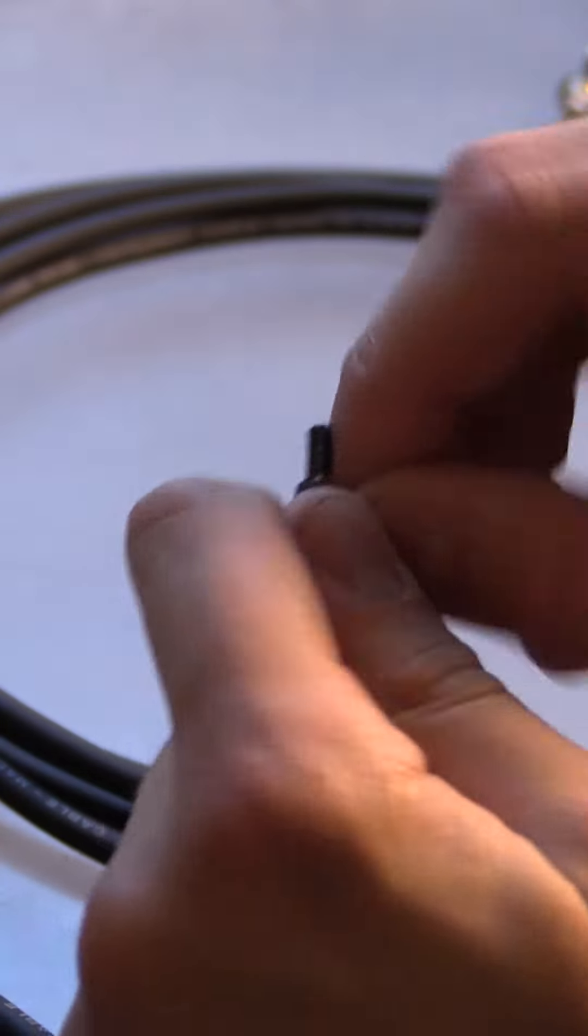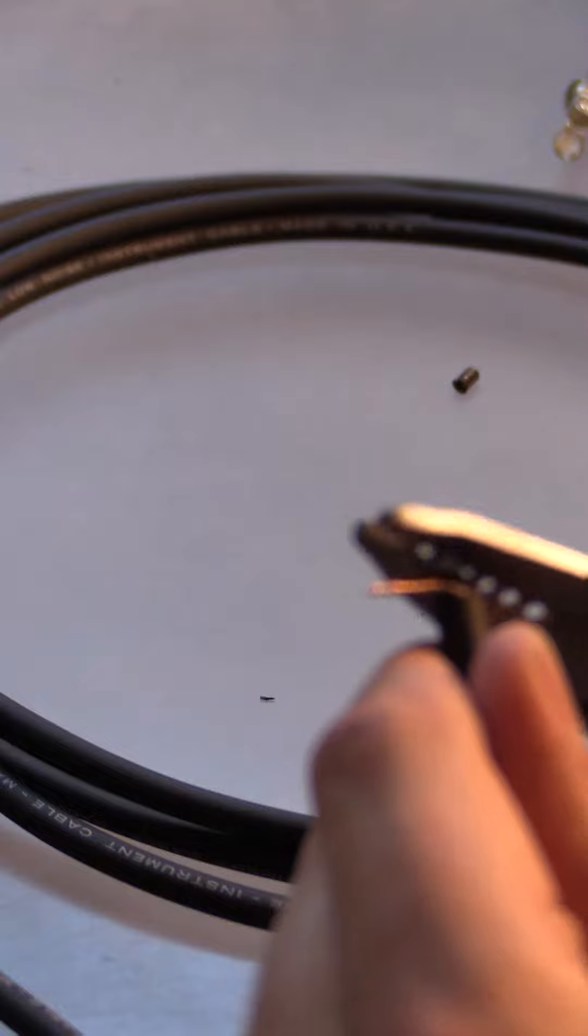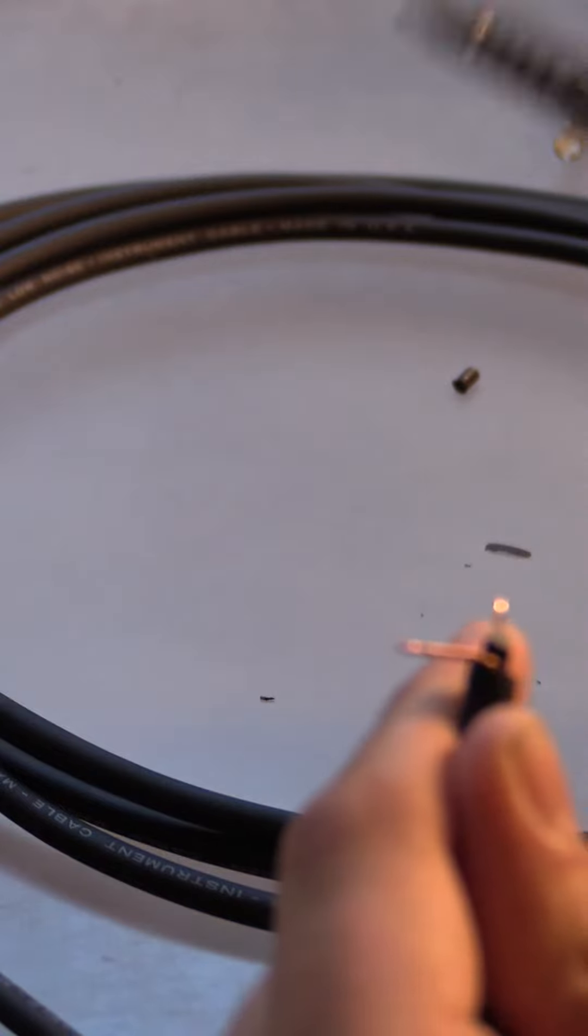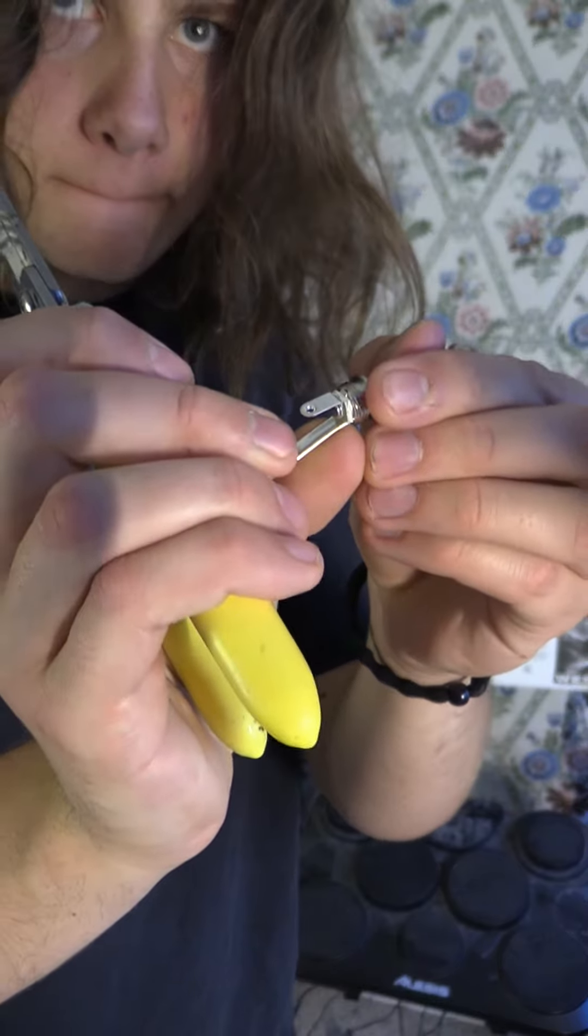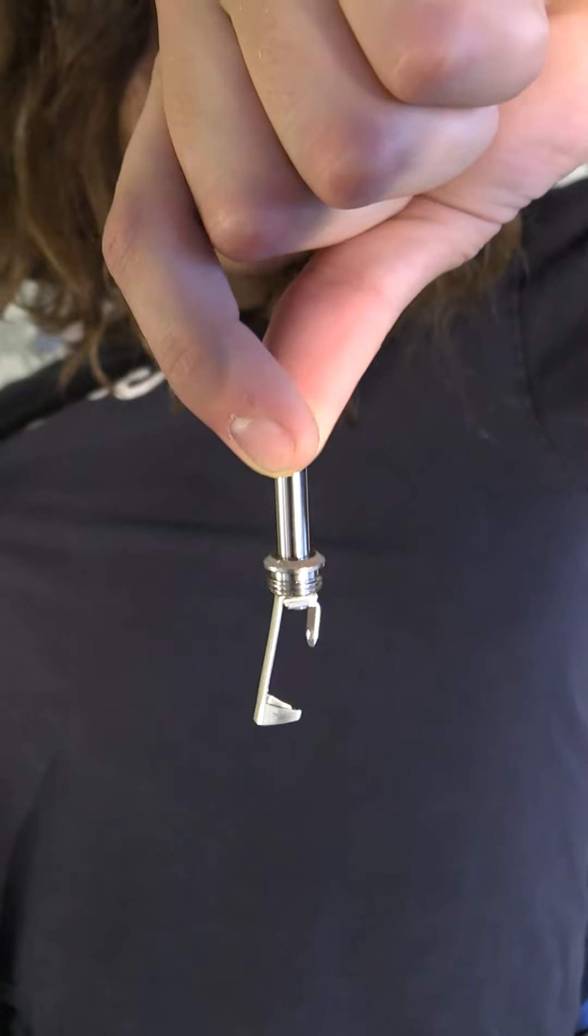Then you want to strip this conductive shielding off and then strip the plastic piece off. It should look something like this. Next bend the plugs pinchers outward and the arms just a little bit like so.